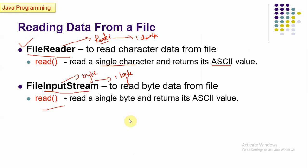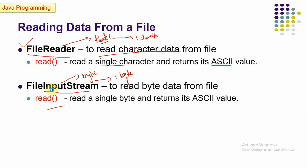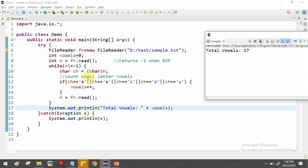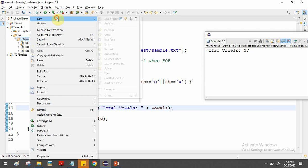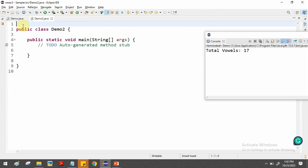FileReader reads character data — character by character. Next, FileInputStream also reads from a file but reads byte data — one byte at a time, compared to FileReader's two bytes at a time. The read() function works the same way. I'll create a new program Demo2 to demonstrate FileInputStream.